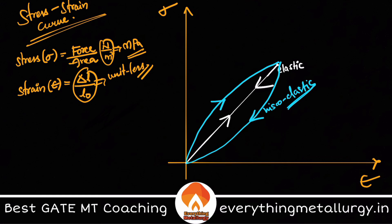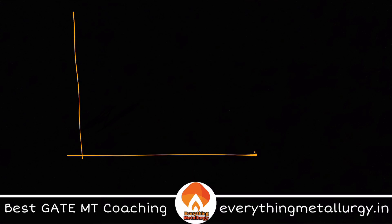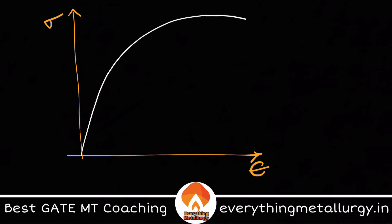The plastic deformation curve is of greatest importance in mechanical metallurgy, because this is the curve you encounter most commonly. It has a characteristic shape. There are different labeled regions on it: point A-dash, point A, point B, point C, and point D. Point A is my elastic limit, and point A-dash is the proportionality limit.